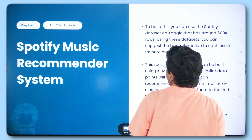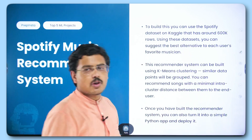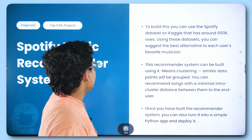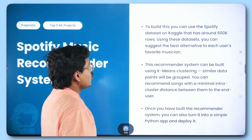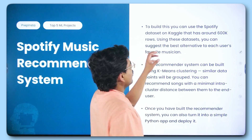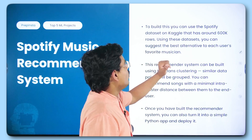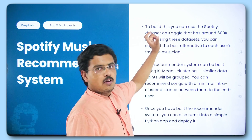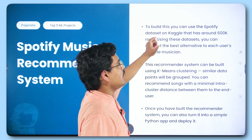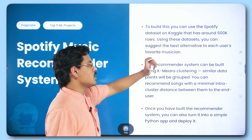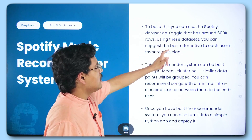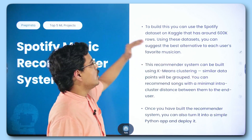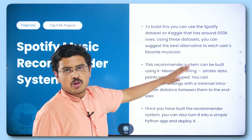The next project is a Spotify Music Recommender System. When building it, you can use the dataset on Kaggle — it is available for free and has around 600,000 rows. Using this dataset, you can suggest the best alternative to each user's favorite musician.